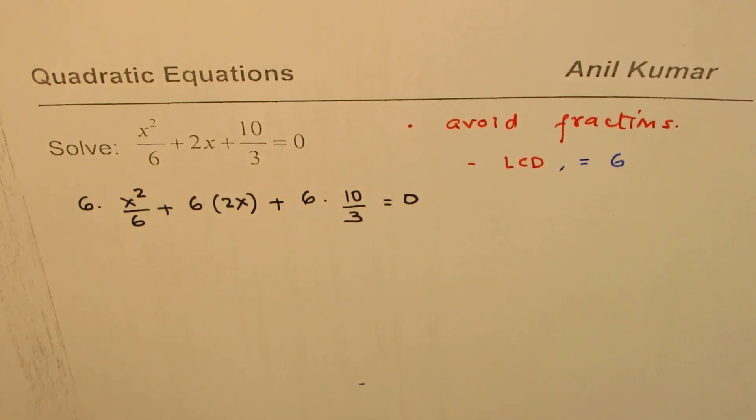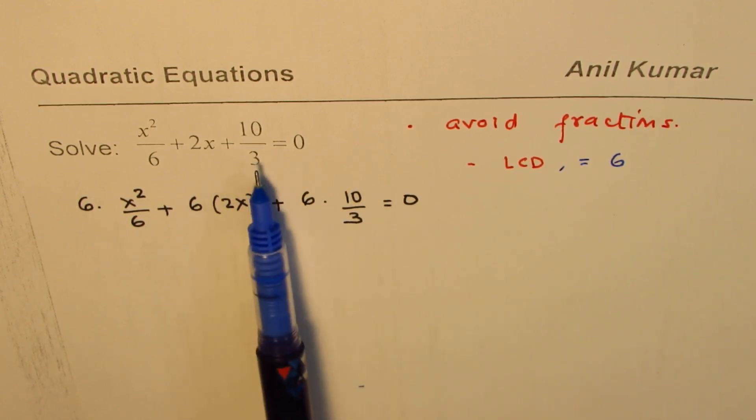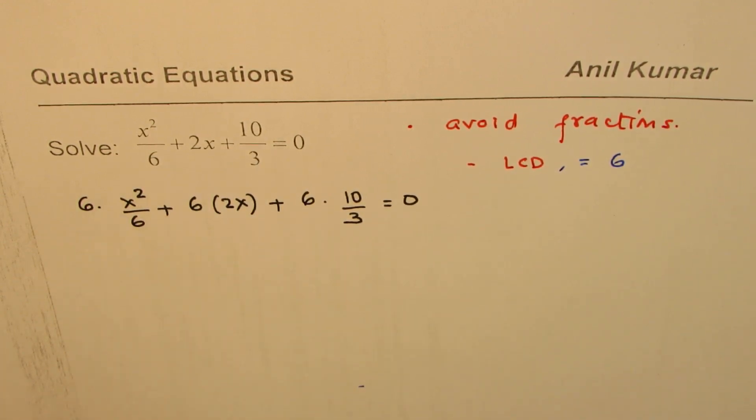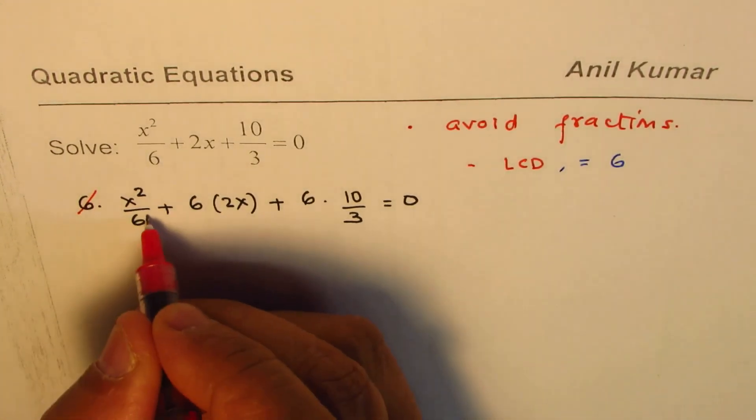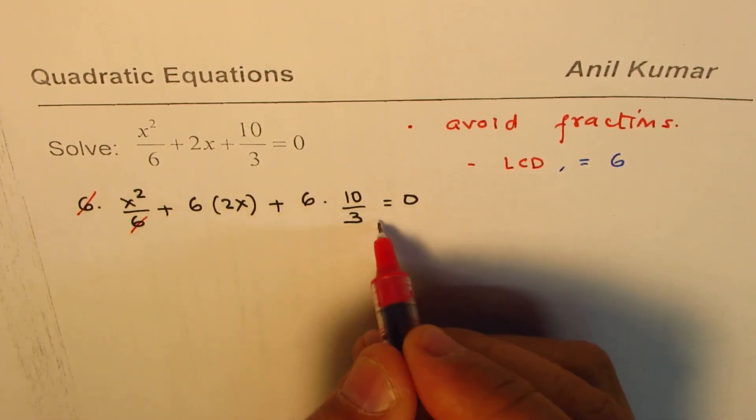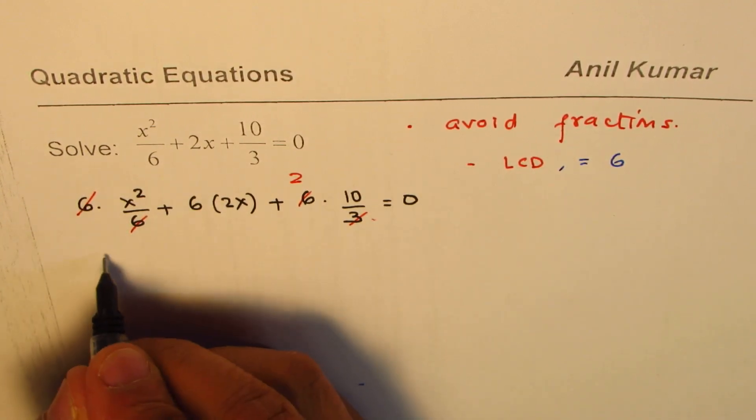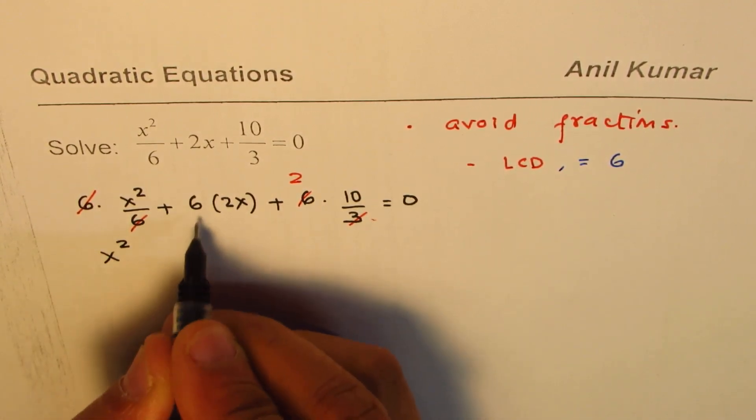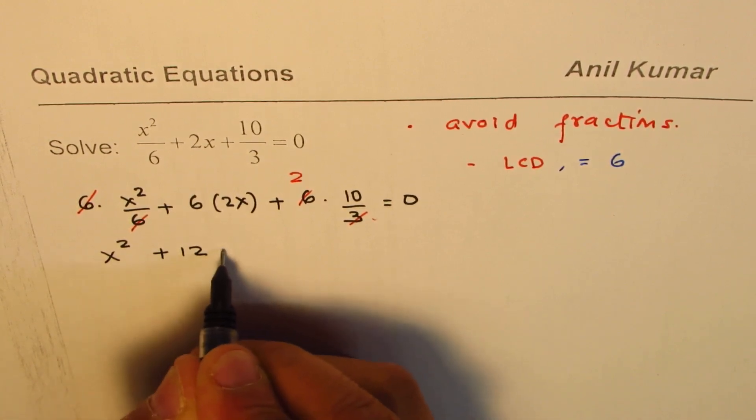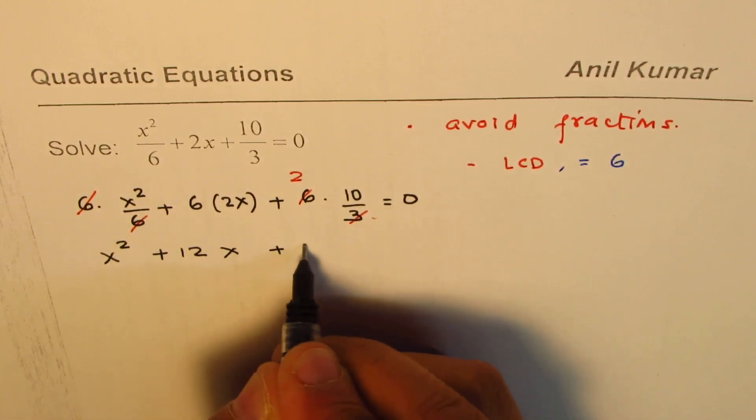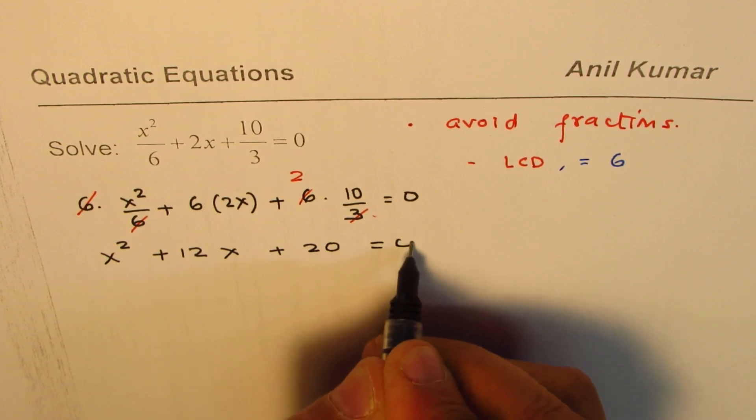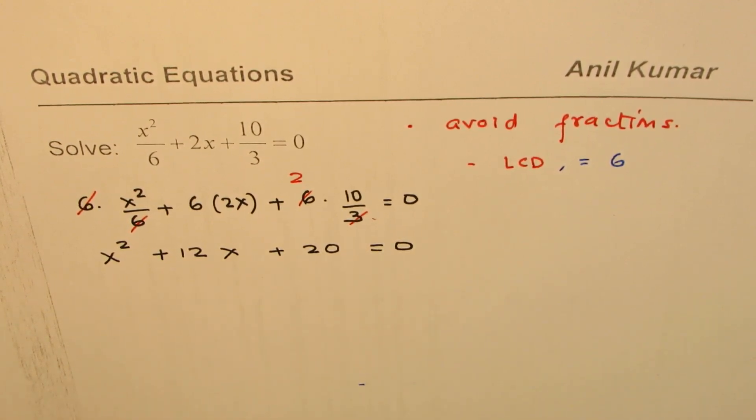So at this stage, we have multiplied each term by the lowest common denominator, which is 6 in this particular case. Now you can simplify this. 6 divided by 6 is 1 and here we'll get 2. So that gives us x squared plus 12x plus 20 equal to 0 as a quadratic equation to be solved.